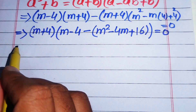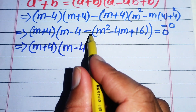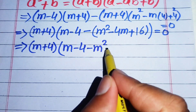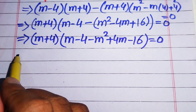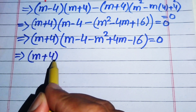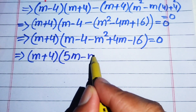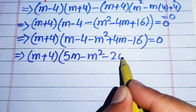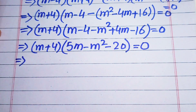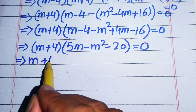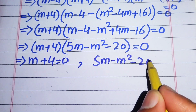Now we simplify further, rewriting the expression as m plus 4 times m minus 4, then distributing the negative sign to get minus m squared plus 4m, and combining like terms: 4m plus m gives 5m, and minus 4 minus 16 gives minus 20. So we have m plus 4 times 5m minus m squared minus 20 equals 0. Our two cases are: m plus 4 equals 0, and 5m minus m squared minus 20 equals 0.